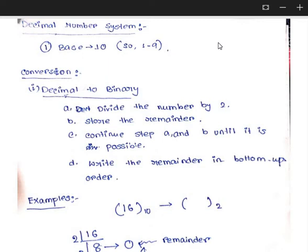Then after, we will start with the decimal number system. Now, if you have not gone through the previous video, I will request you to please see the last video so that you will understand what is number system and the binary number system very well. Number system is basically a system in which we can represent a number in different ways. We have discussed four basic number systems: binary, decimal, octal, and hexadecimal number system.